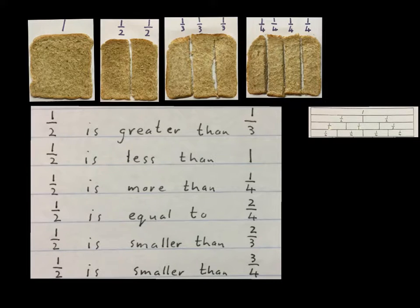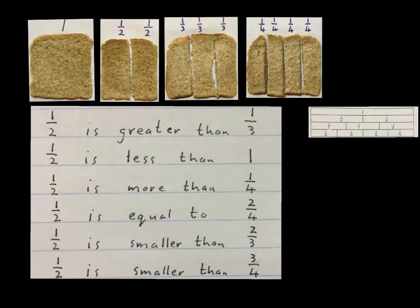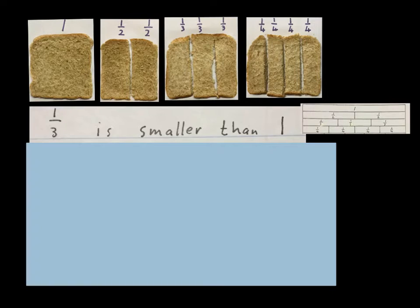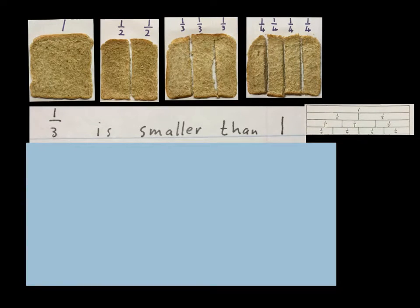I know it's easier for grown-ups to look at the fraction wall and compare it. But it is better to have something in your hand, in front of you — pieces of bread — and compare them, and then totally understand what you are writing, not just do maths. I'm going to keep the fraction wall on the side, but I'll be talking through the slices of bread.